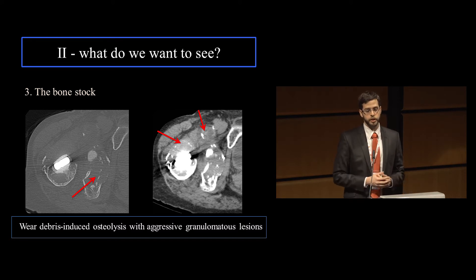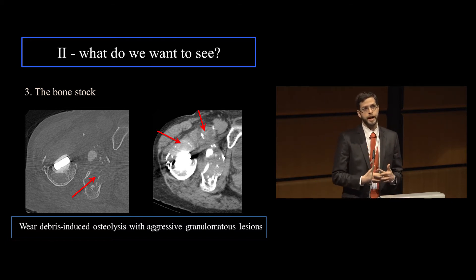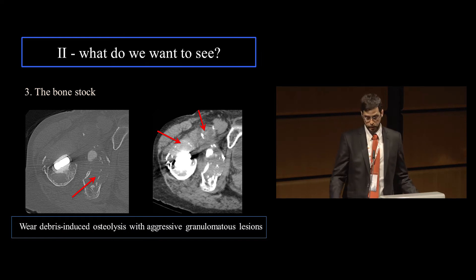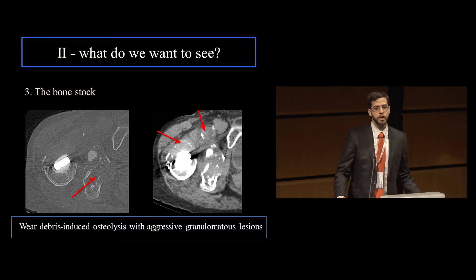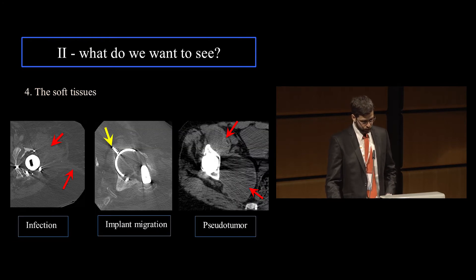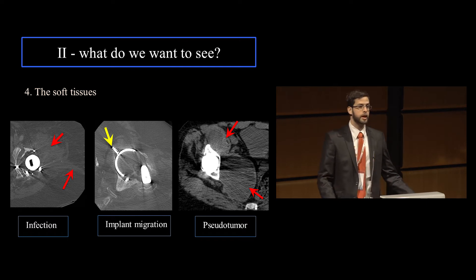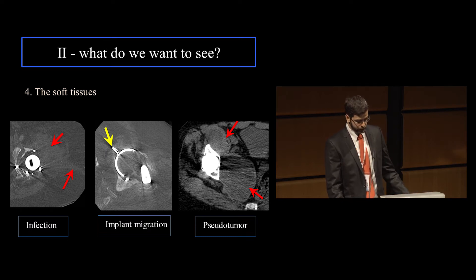These prostheses have a limited lifespan, so eventually they'll have to be replaced. In this scenario, it's very important to evaluate the bone stock because that's what the surgeon needs to implant the second prosthesis. CT is pretty much the only method that can do that. You can see that in this case, with aggressive villonodular reaction in the joint cavity, the bone is destroyed by this process, making it very hard to implant a prosthesis. The surgeon has to go for grafts or other support. Obviously, soft tissues can be affected by many conditions such as infection, implant migration, and pseudotumoral lesions such as a massive joint effusion.